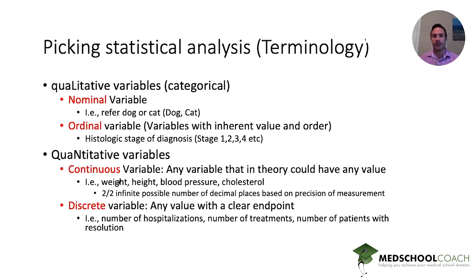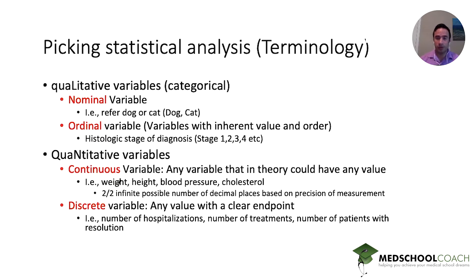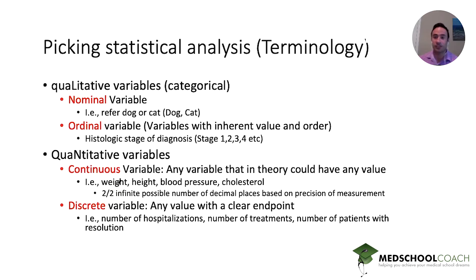Ordinal variables have some sort of inherent value or order to them. For example, the staging of cancer — stage one, two, three, and four — each has some inherent value, in this case severity of disease. But the numbers themselves don't actually have a true numerical value; they could be replaced by any title, such as mild, modest, severe, ultra severe. So they're not truly numerical or quantitative data — they're actually just categories.